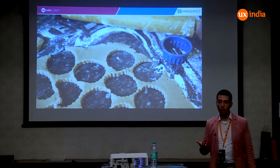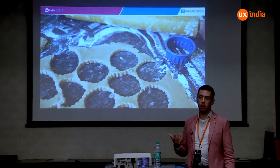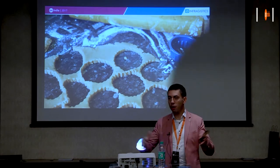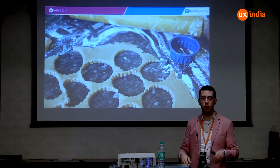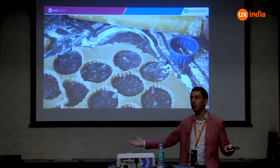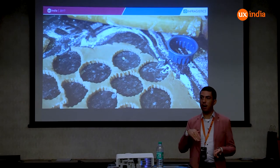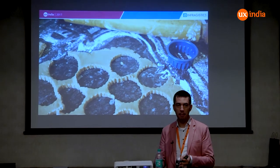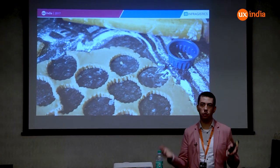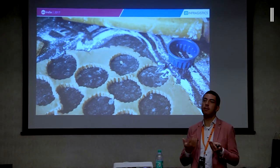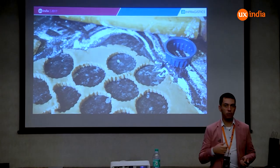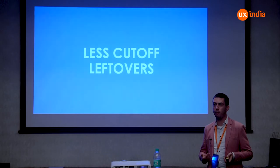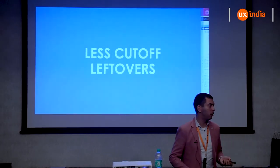In order to cut the dough, it's also important not to cut it randomly — if you cut randomly, you have a lot of leftover that you have to knead again, roll out, and cut once more, going through many iterations. However, if you optimize your cutting strategy, you'll have less leftover each time, and instead of going through five or six iterations, you'll only go through three or four. That obviously saves a lot of time — and talking about saving time and productivity, the last section is really about reducing cut-off leftovers when building software.